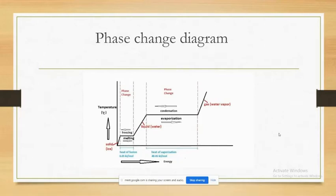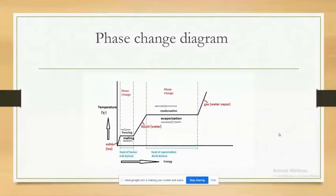From 0 to 100°C, H₂O is in the liquid state. At 100°C, water and steam are in equilibrium with evaporation and condensation taking place simultaneously. At temperatures greater than 100°C, H₂O is in the vapor phase.